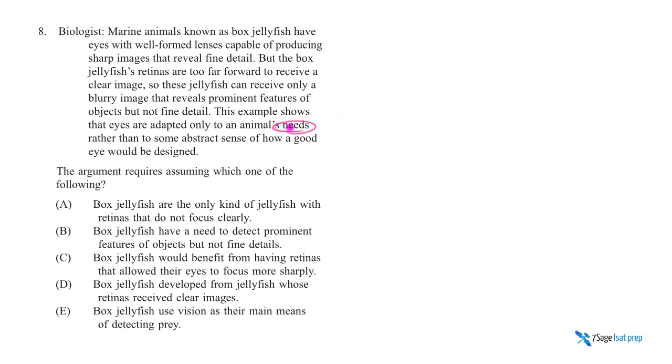In our conclusion, we're introduced to a new concept. You just need to bridge this new concept to the concepts that were already introduced. So marine animals known as box jellyfish have eyes with well-formed lenses capable of producing sharp images that reveal fine detail. So that's their eyes.